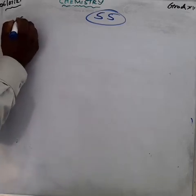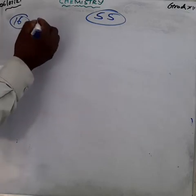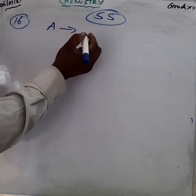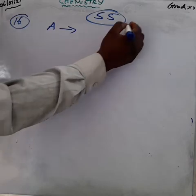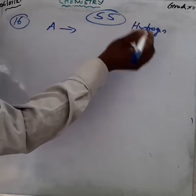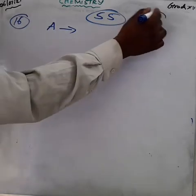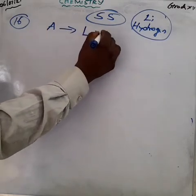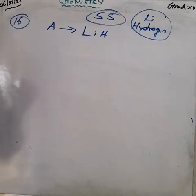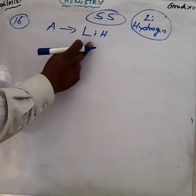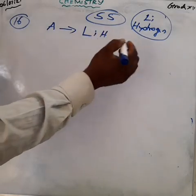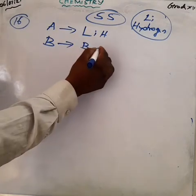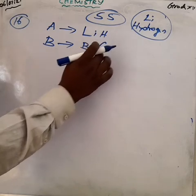A hydrate of a second period alkali metal — second period alkali metal means lithium. So A means lithium hydride. Lithium hydride is compound A. On reaction with compound B, which is a boron compound, we already learned thoroughly about boron compounds.